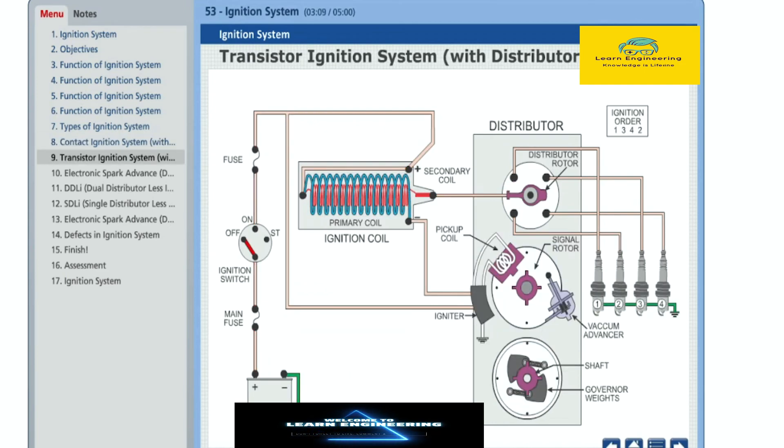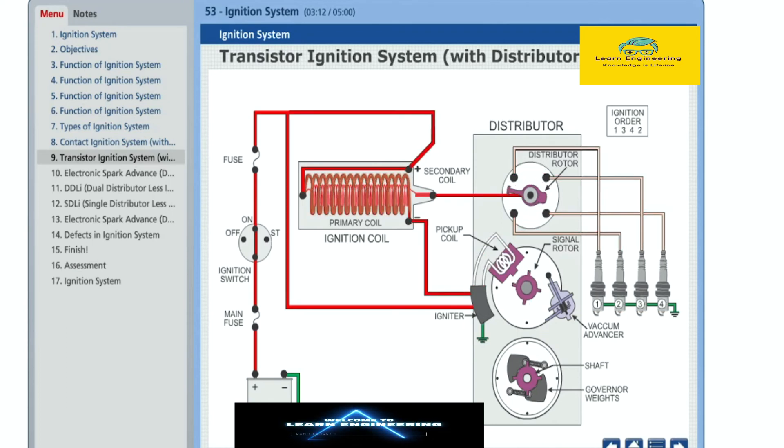Let us examine the function of transistor ignition system or electronic ignition system with distributor. Structurally, this system is similar to contact ignition system except one difference. In this system, the current flowing from battery to the primary coil is cut off by a transistor present in the igniter. The signal to igniter to cut off the primary coil circuit is given in the form of AC signal generated by pickup coil and signal rotor.